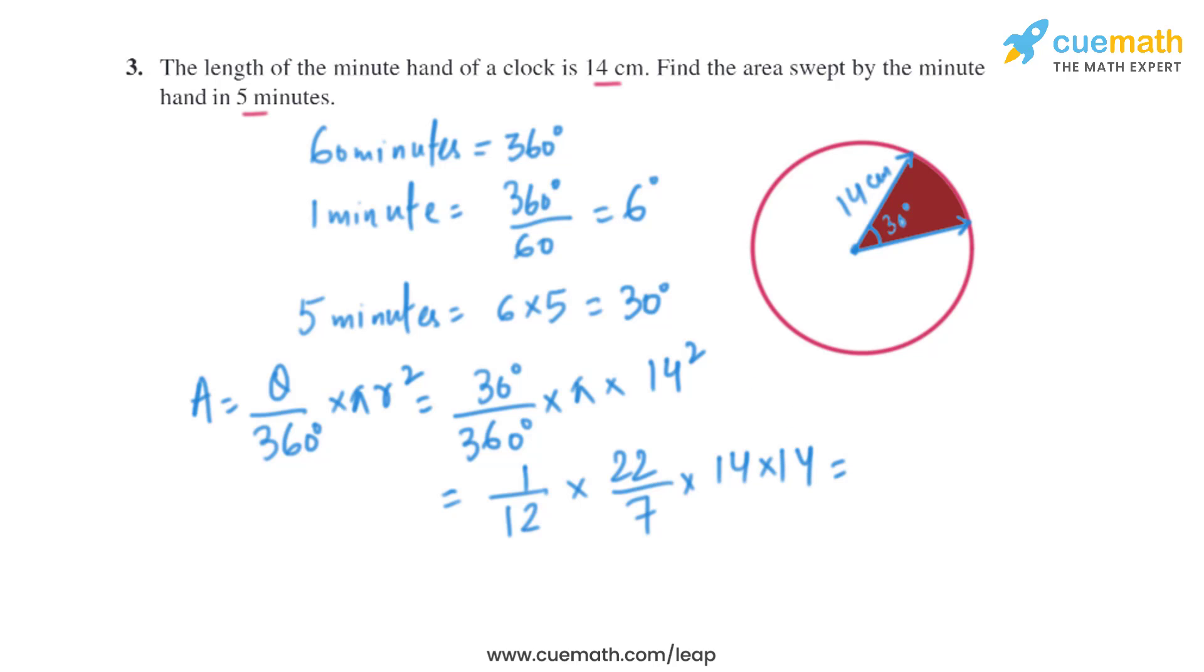Square centimeters. So the area swept by the minute hand in 5 minutes is 154 divided by 3 square centimeters.